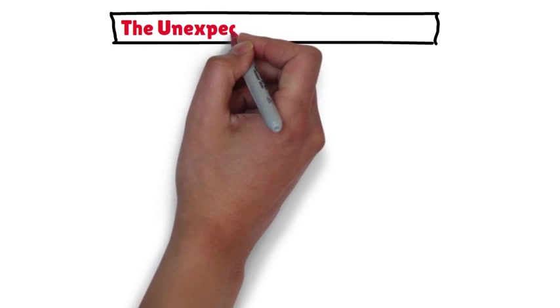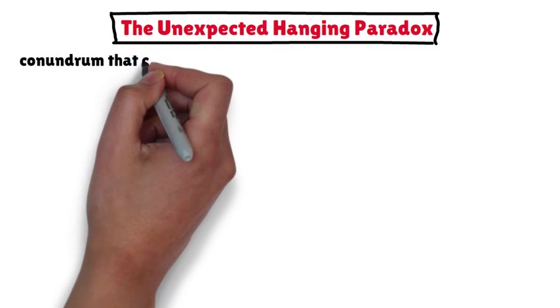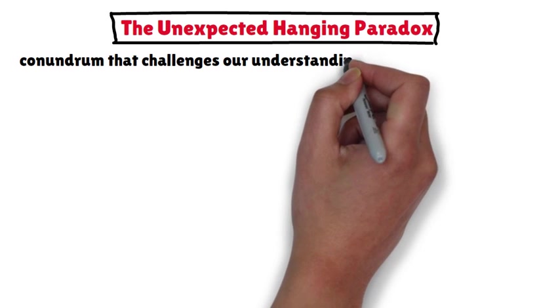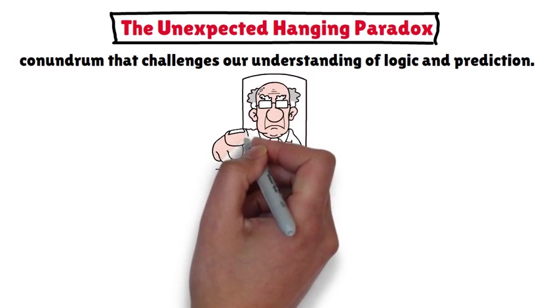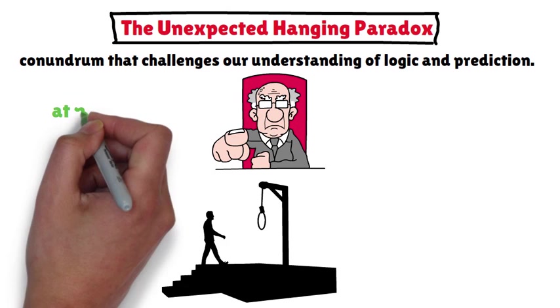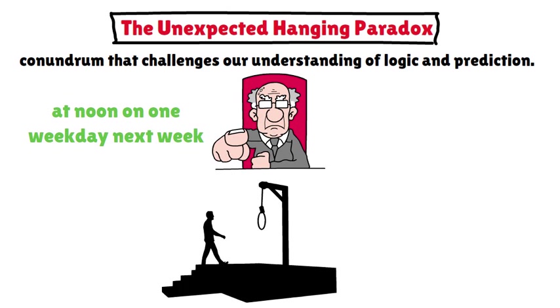The Unexpected Hanging Paradox is a conundrum that challenges our understanding of logic and prediction. Imagine a convict sentenced to death who is told he will be hanged at noon on one weekday next week, but the execution will come as a surprise.